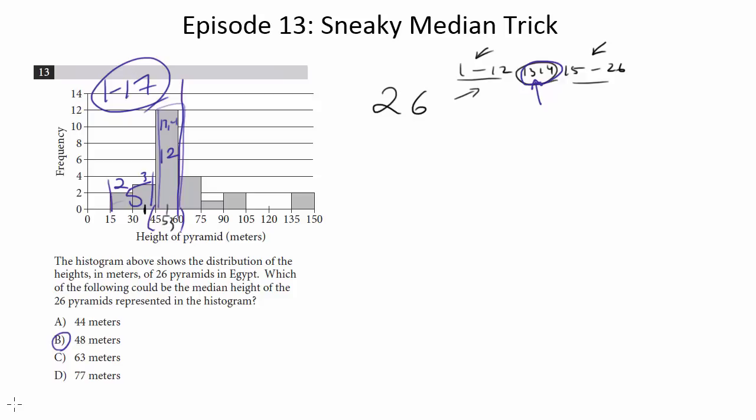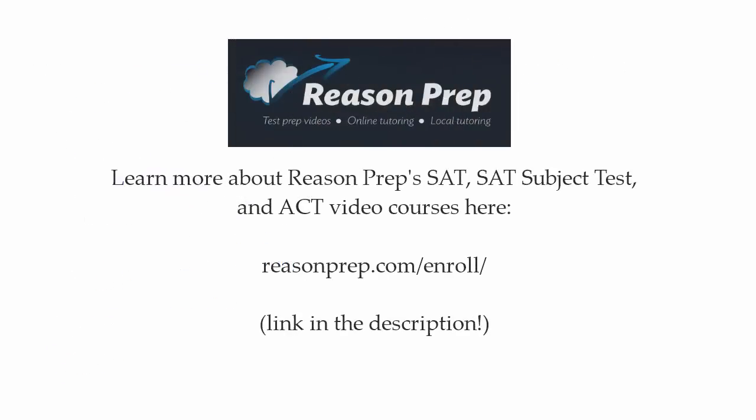We don't know the exact median. They want to know what the median could be. We don't need to know the exact number, but we know it's going to be somewhere in this bar based on the fact that that median has got to be between the 13th and the 14th number, which is somewhere in this bar. So somewhere between 45 and 60, choice B.